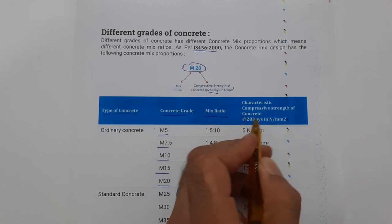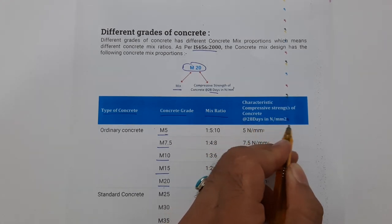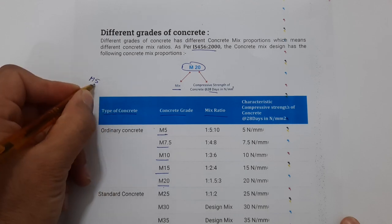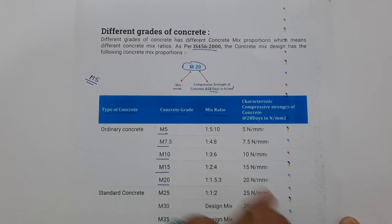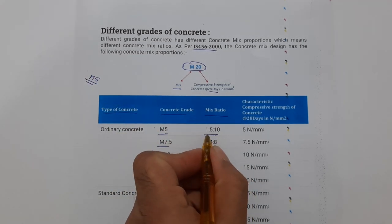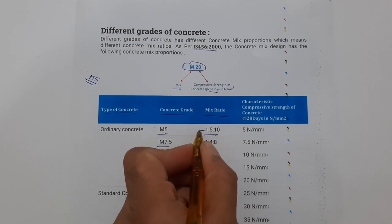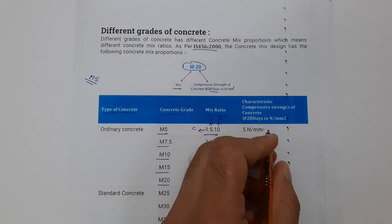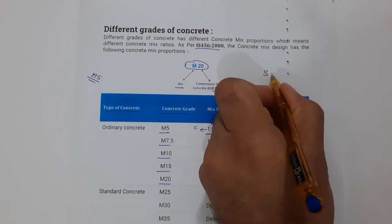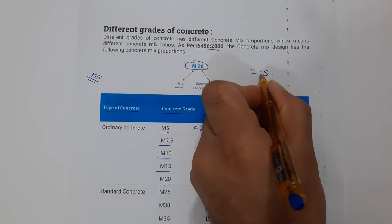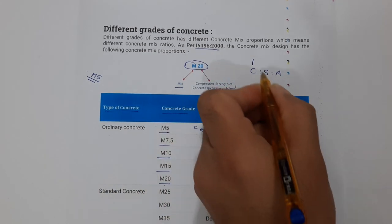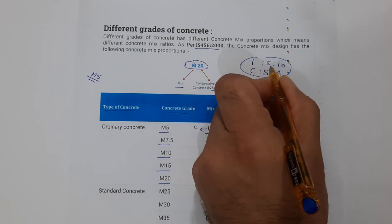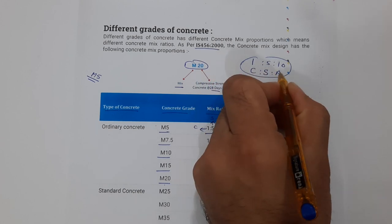For M5: if you are using M5 grade concrete on a construction site and someone tells you to use M5 grade concrete, it means its ratio should be 1:5:10, where 1 is cement, 5 is sand, and 10 is aggregate. So one part is cement, five parts are sand, and ten parts are aggregate. This is M5.